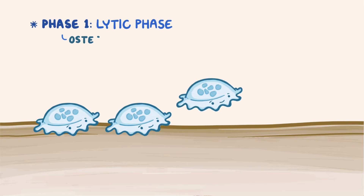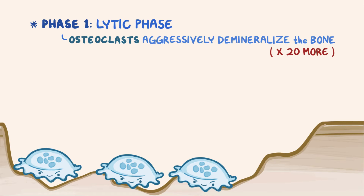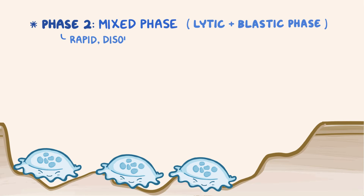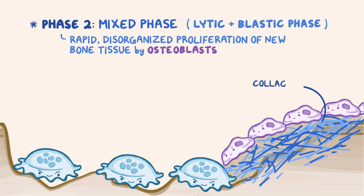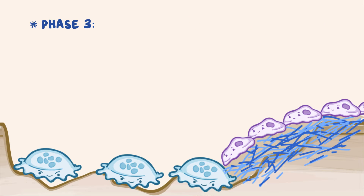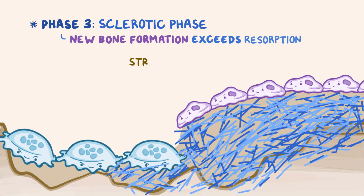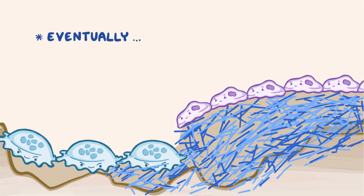There are three main phases to the disease. Phase 1 is the lytic phase, where osteoclasts which have up to 100 nuclei start to aggressively demineralize the bone up to 20 times more than normal. Phase 2 is the mixed phase, where the lytic phase occurs alongside the blastic phase — a rapid but relatively disorganized proliferation of new bone tissue by an unusually large number of osteoblasts, resulting in collagen fibers deposited in a haphazard way. Phase 3 is the sclerotic phase, where new bone formation exceeds bone resorption, resulting in bone that's structurally disorganized and weaker than normal. Eventually, osteoblastic activity also slows down and there's a dormant state called the burned out state.